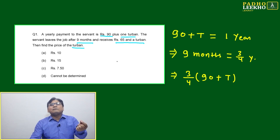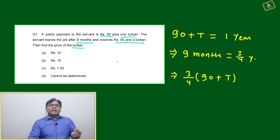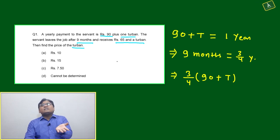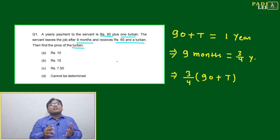Due to turban price, whatever will be the excess that will be adjusted with the price whatever they are giving in money. Money they can reduce - in place of 90 they can give 80, in place of 80 they can give 70 - but turban they can't change. Either they can give or they can't give.